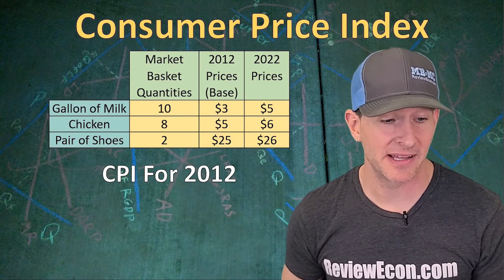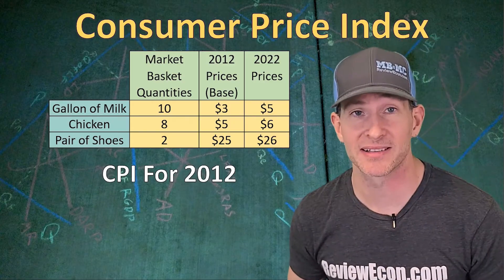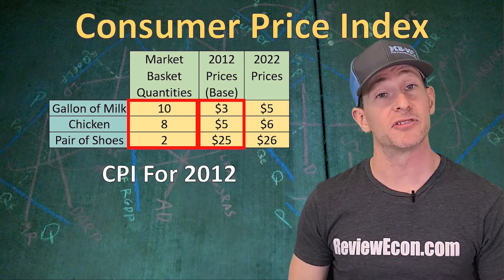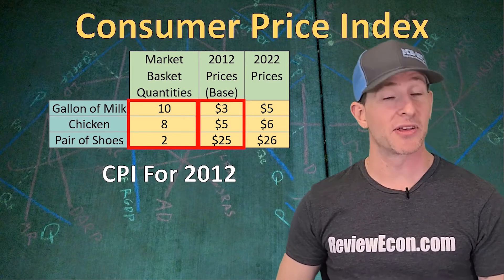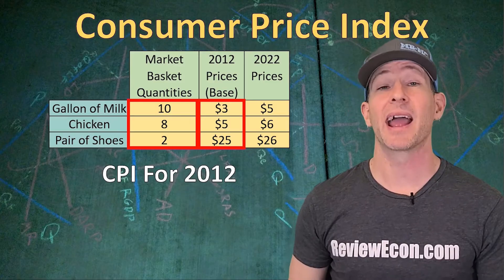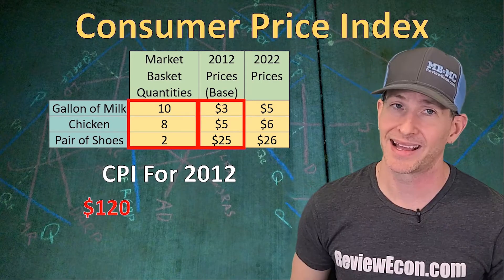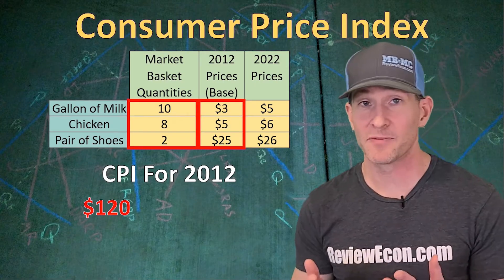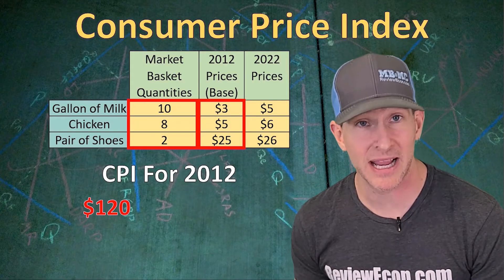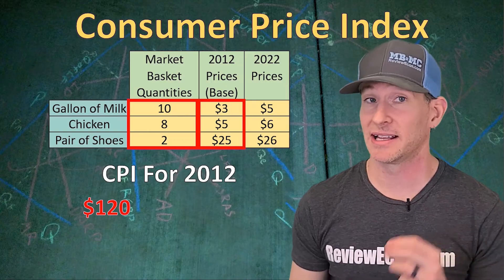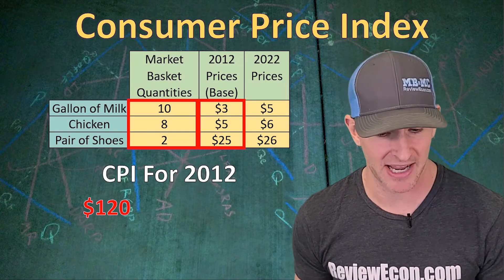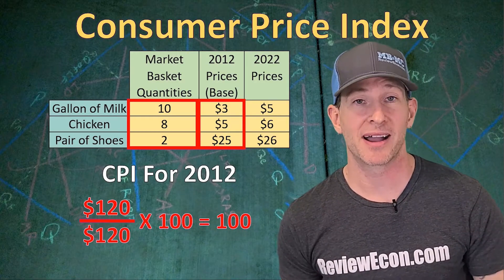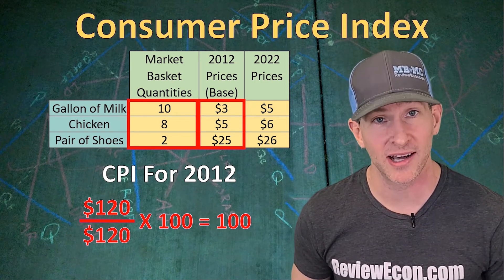First, we'll calculate the CPI for 2012. We calculate the value of the market basket using 2012 prices: 10 gallons of milk times $3, plus 8 chickens times $5, plus 2 pairs of shoes times $25. That gives us $120 for the market basket value in 2012. Since 2012 is also our base year, the base year value is the same — $120. So $120 divided by $120 times 100 gives us a CPI of 100 for 2012.